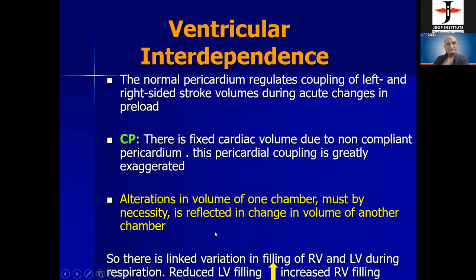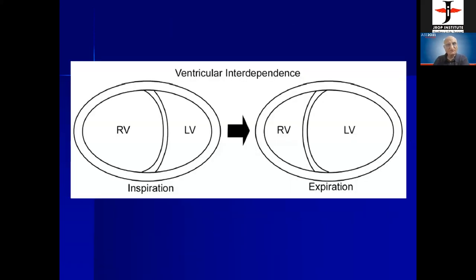During inspiration, there is increased filling of the right ventricle. The septum automatically shifts toward the left side, reducing left ventricular volume. During expiration, the reverse occurs — LV volume increases, pushing the septum toward the right ventricle, and RV volume decreases. An increase in volume in one chamber is compensated by a decrease in the other — this is ventricular interdependence.